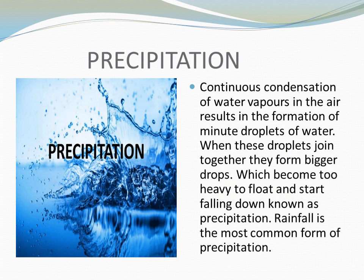The next element is precipitation. Continuous condensation of water vapor in the air results in the formation of minute droplets of water. When these droplets join together, they form bigger drops which become too heavy to float and start falling down — this is known as precipitation. Rainfall is the most common form of precipitation.